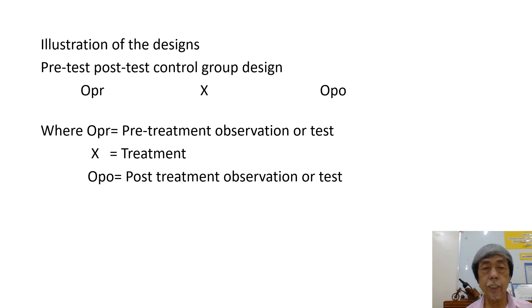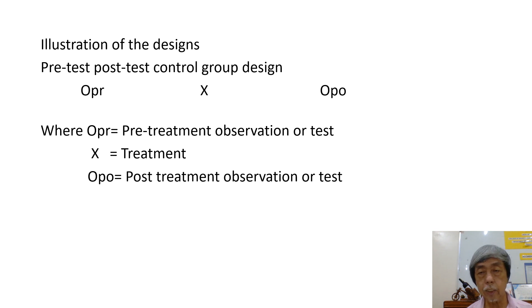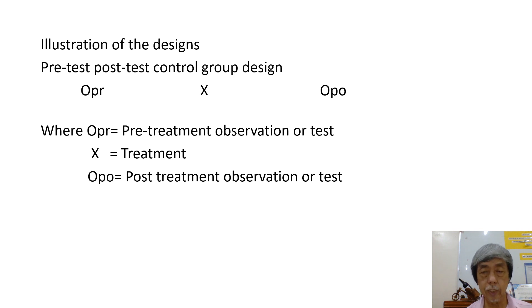This is the illustration of the pre-test post-test control group design. We have OPR, X, and OPO — where OPR is the pre-treatment observation or test, X is the treatment, and OPO is the post-treatment observation or test.